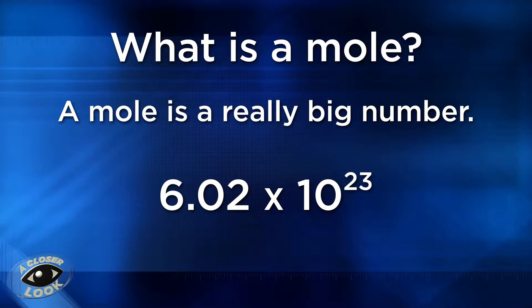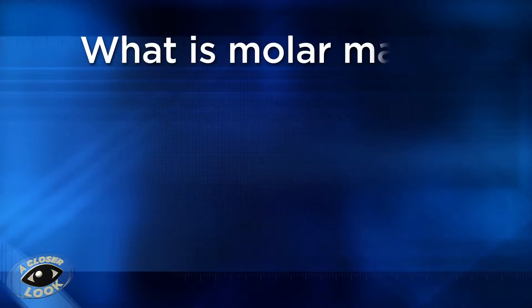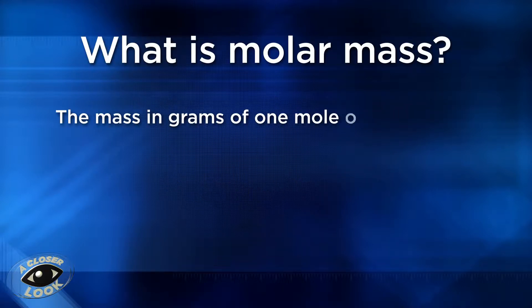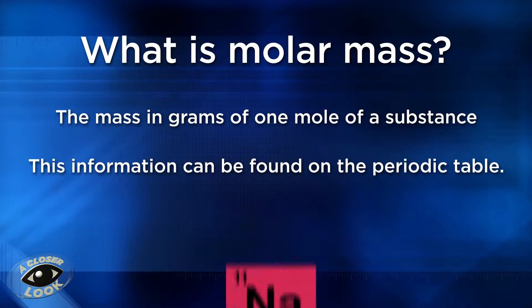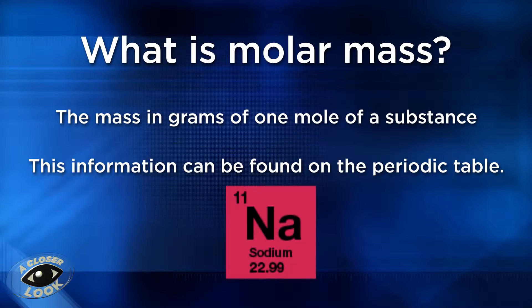When we are talking about molar mass, we are referring to the mass in grams of one mole of a substance. The molar mass can be found on the periodic table. For example, the molar mass of sodium would be 22.99 grams — again, this information can be found on the periodic table.